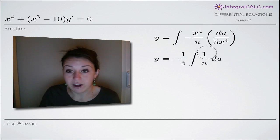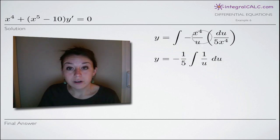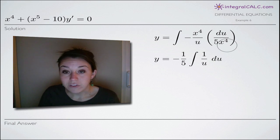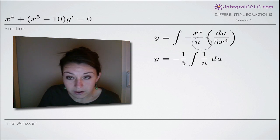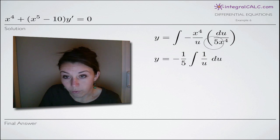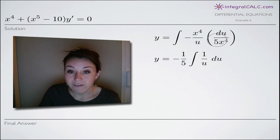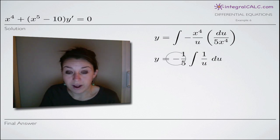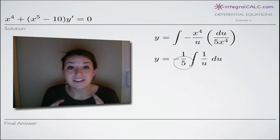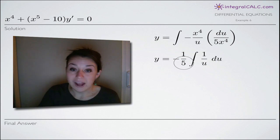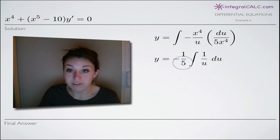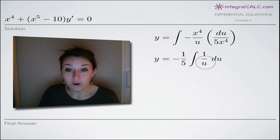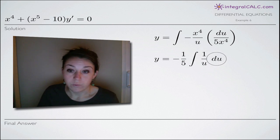Now we need to simplify our integral. We've got x to the 4th in the numerator and x to the 4th in the denominator, so those two terms cancel. Then we pull out a negative one-fifth — we get the negative from the numerator and the one-fifth from the 5 in the denominator. Since everything inside the integral is multiplied together, we can pull it out in front, and all we have left within the integral is 1 over u times du, which is easy to integrate.